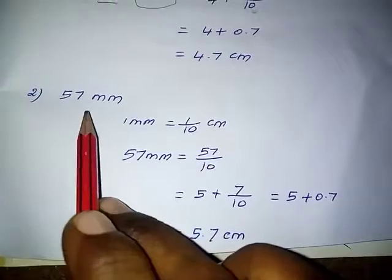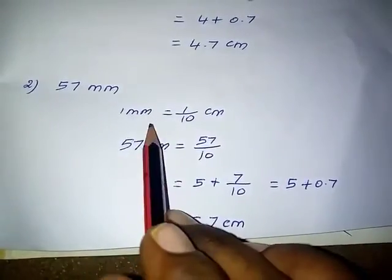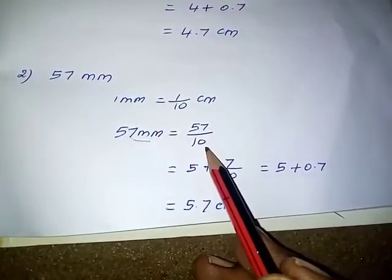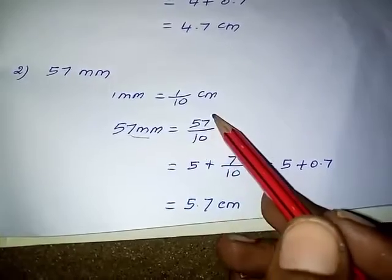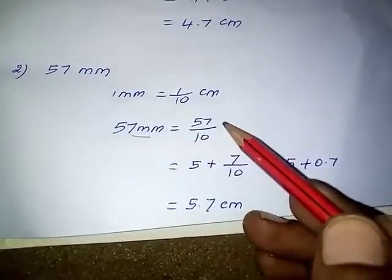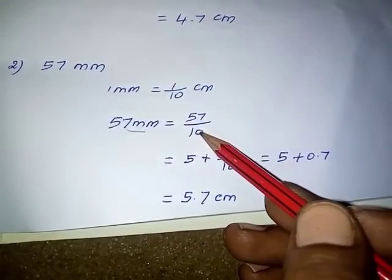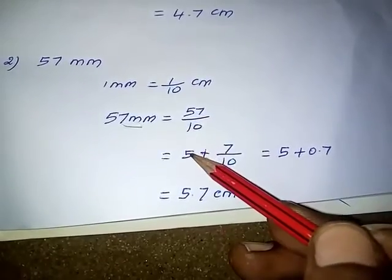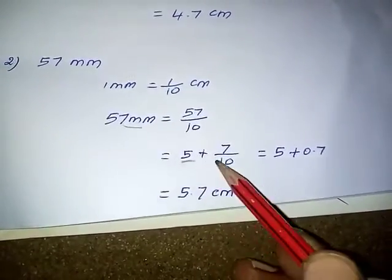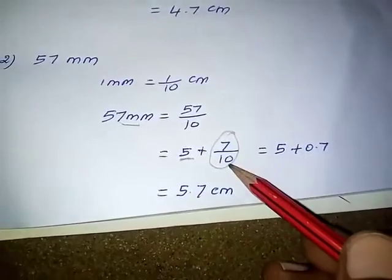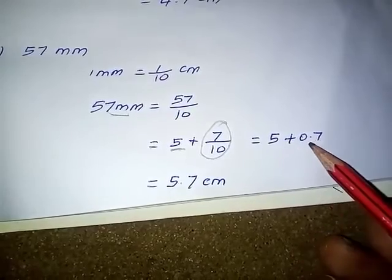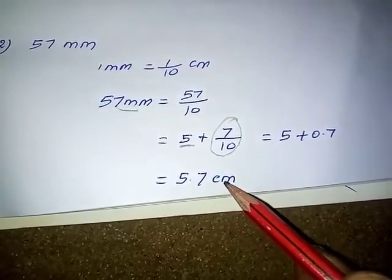Question number 2: 57 millimeter. So 1 millimeter equal to 1 by 10 centimeter, therefore 57 millimeter equals 57 by 10. This is an improper fraction, so we convert to a mixed fraction. Numerator divided by denominator: 5 times in the 10 table — 5 tens are 50, remainder is 7. So 5 is the integral part and 7 by 10 is the decimal part, giving 5 plus 0.7, which equals 5.7 centimeter.